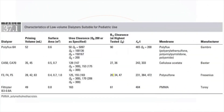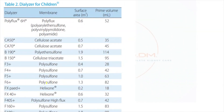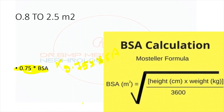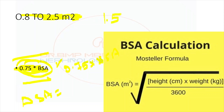One more point: how to select the dialyzer in the pediatric patient. Rather than complex tables, it is clearer to calculate the dialyzer surface area based on body surface area. In adult patients, dialyzer surface area equals 0.75 multiplied by body surface area. Body surface area is calculated as: the square root of (height in centimeters × weight in kilograms ÷ 3600), and 1.6 is the body surface area for an adult patient. Dialyzers are commercially available in the range of 0.8 to 2.5 meter square surface areas, with 1.3 to 1.5 meter square typically used for adult patients.